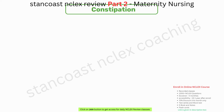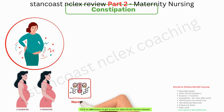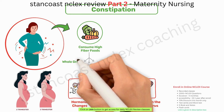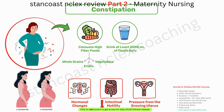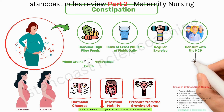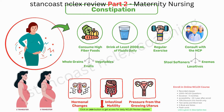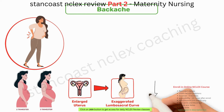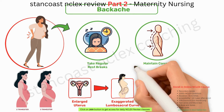Constipation often occurs in the second and third trimesters due to hormonal changes, decreased intestinal motility, and pressure from the growing uterus. Individuals should consume high-fiber foods like whole grains, fruits, and vegetables; drink at least 2,000 milliliters of fluids daily; engage in regular exercise such as a 20-minute walk; and consult with their HCP for stool softeners, laxatives, or enemas if needed. Backache is common in the second and third trimesters due to an enlarged uterus causing an exaggerated lumbosacral curve; regular rest breaks, correct posture, and proper body mechanics are recommended.